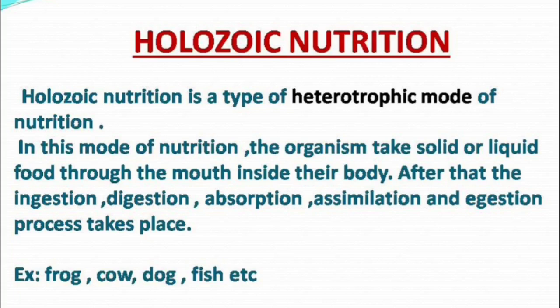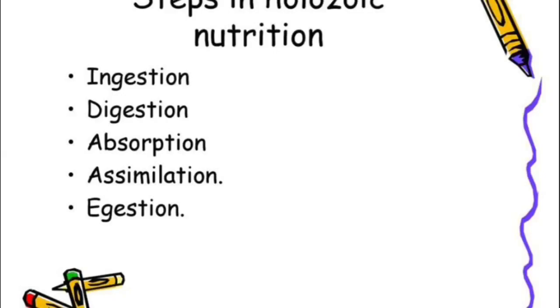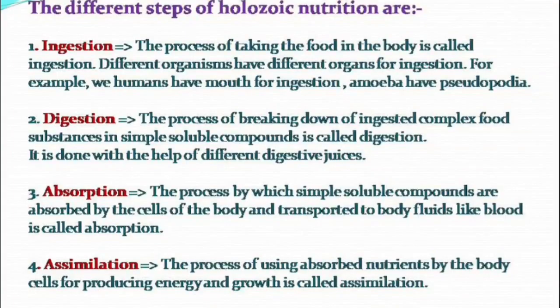The food must first be digested and then absorbed by the cells before we get energy. So we can say that in holozoic nutrition, organisms take solid or liquid food through the mouth inside their body. After that, the processes of ingestion, digestion, absorption, assimilation, and ejection take place. There are five steps in holozoic nutrition: ingestion, digestion, absorption, assimilation, and ejection.